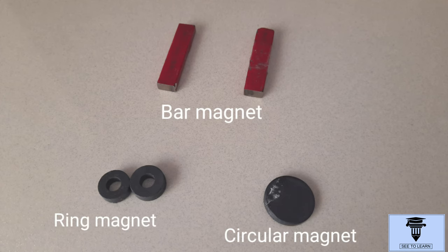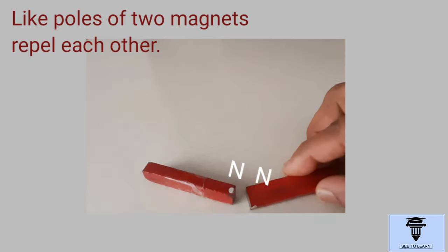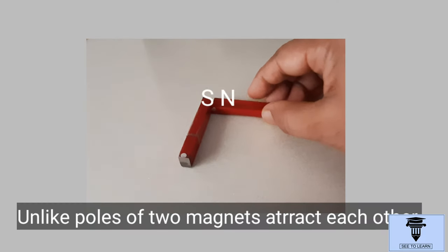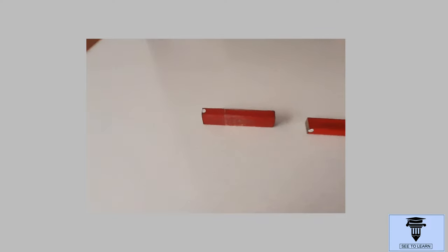These are some of the different shapes of magnets. The like poles of two magnets repel each other, while the unlike poles attract each other, as you can see here. The poles of a magnet cannot be separated even by cutting a magnet into two pieces. Because the cut pieces again behave as independent magnets with two poles.